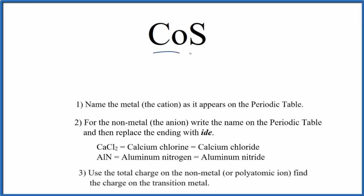To write the name for CoS, we first need to recognize that we have cobalt, that's a transition metal. First we write the name for the metal as it appears on the periodic table. Co, that's cobalt.